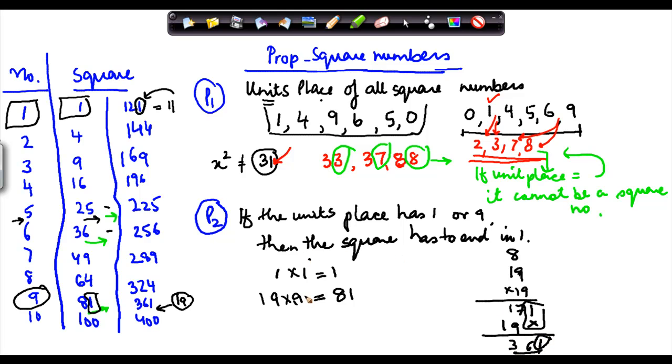So if the number has 1 or 9 in units place, then the square has to have 1 in the units place. You put in 19, you put in 29 into 29, you put 39 into 39, in all the cases the number will end with 1.